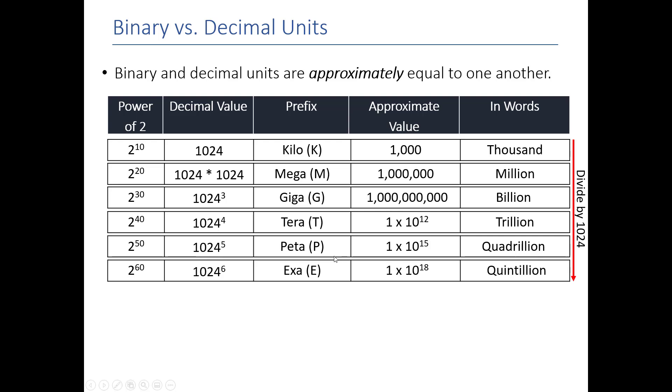If I want to convert between these units, the magic number to remember is 1024. So, in one megabyte, there are 1024 kilobytes. In one gigabyte, there are 1024 megabytes.